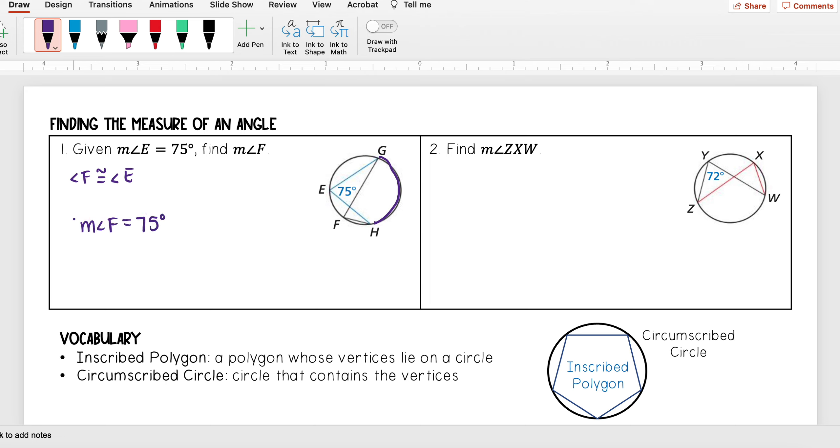Similarly, for this next one, I see that angle ZYW intercepts this arc ZW, and I see that angle ZXW also intercepts the same arc. That means these two angles are congruent.